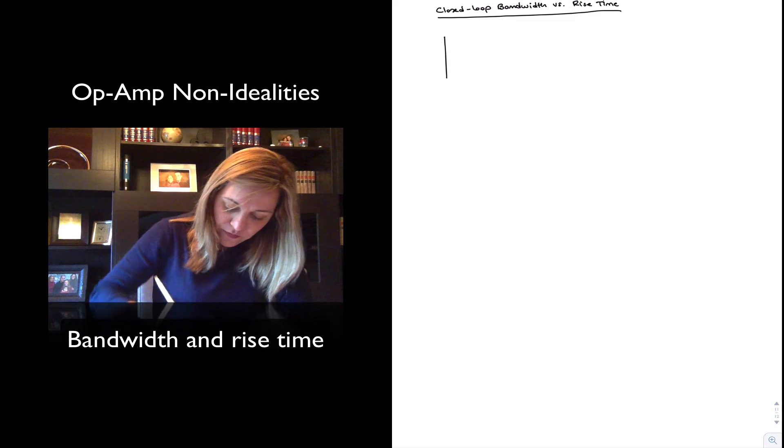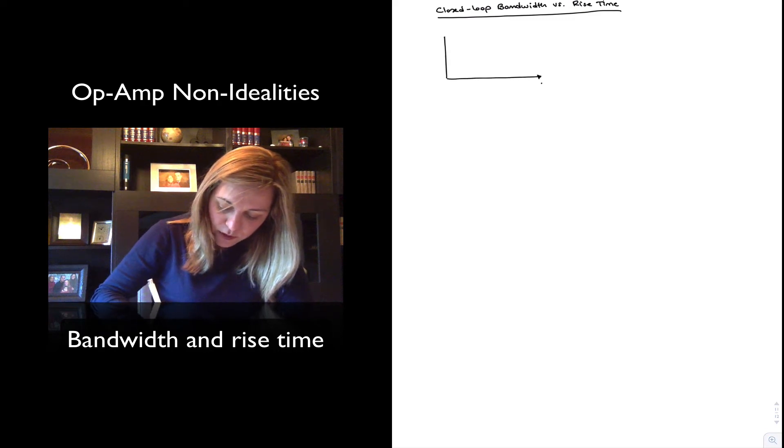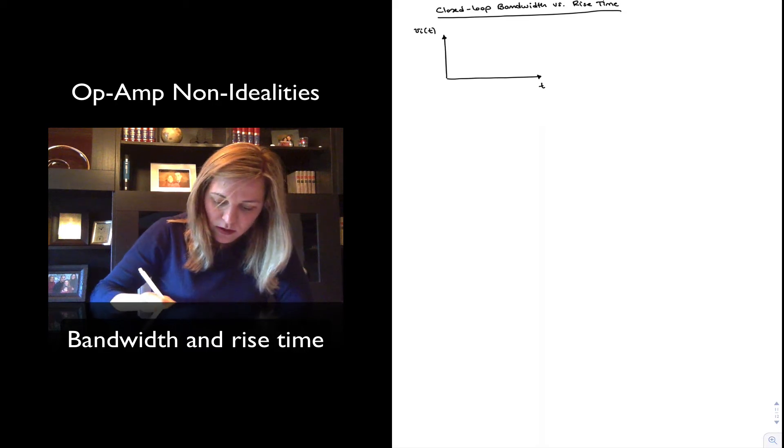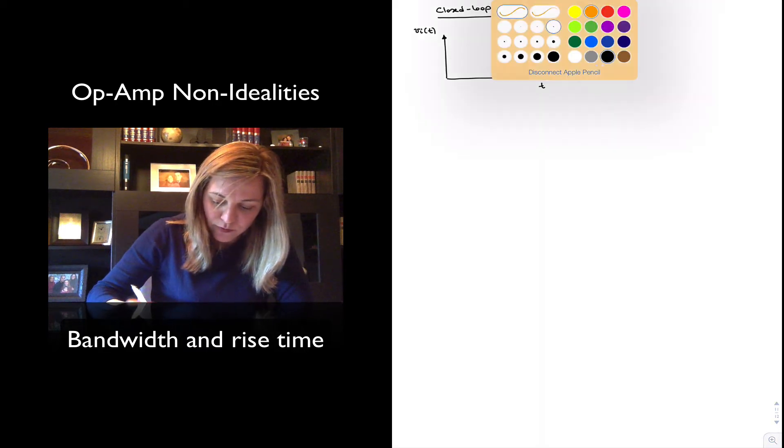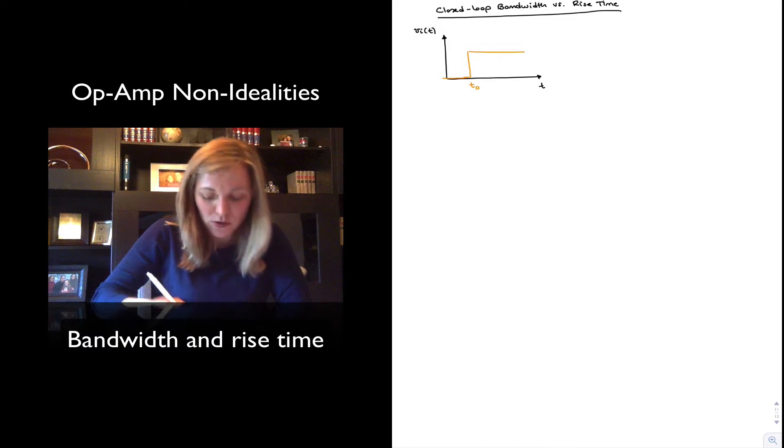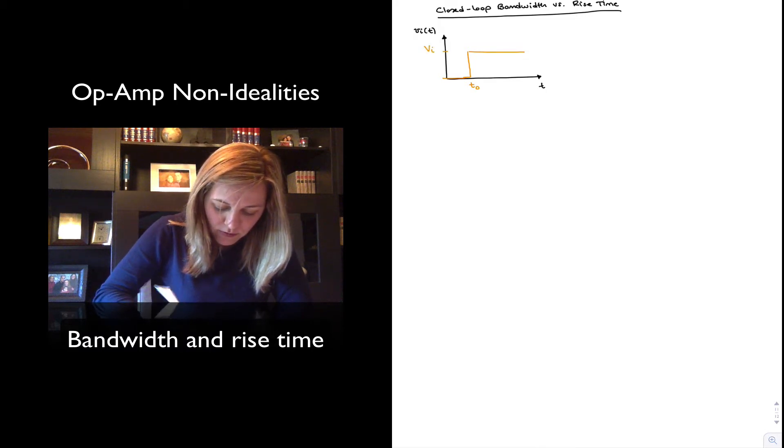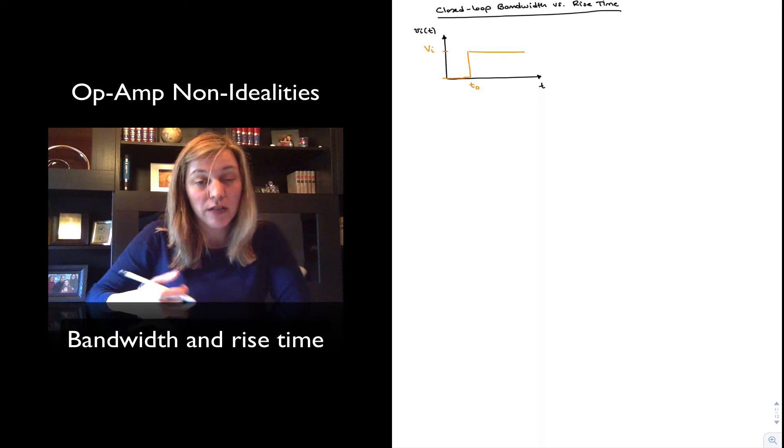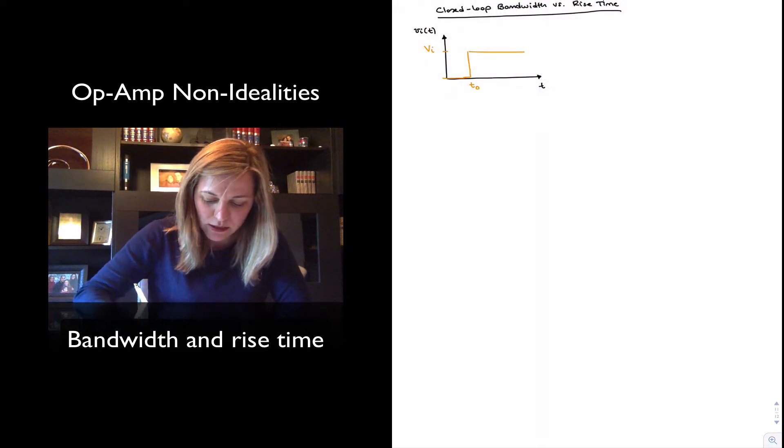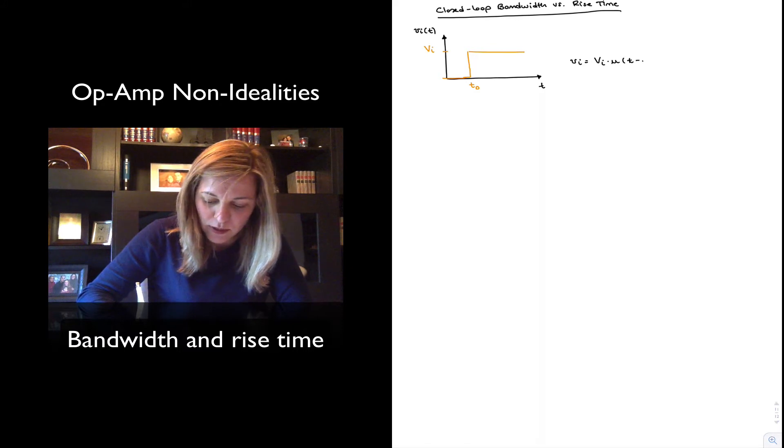So if I have an input signal, let's call it Vi as a function of time, that looks like a step function. Meaning it is equal to zero, and then after some point in time t sub zero, it reaches a value of capital Vi for the amplitude of that input signal. So mathematically I could express this as Vi equals the amplitude times u, the step function of t minus t zero.